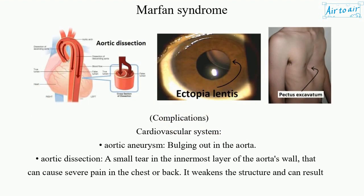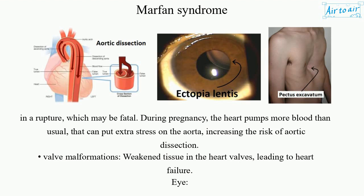Complications — cardiovascular system. Aortic aneurysm: bulging out in the aorta. Aortic dissection: a small tear in the innermost layer of the aorta's wall that can cause severe pain in the chest or back. It weakens the structure and can result in a rupture, which may be fatal.